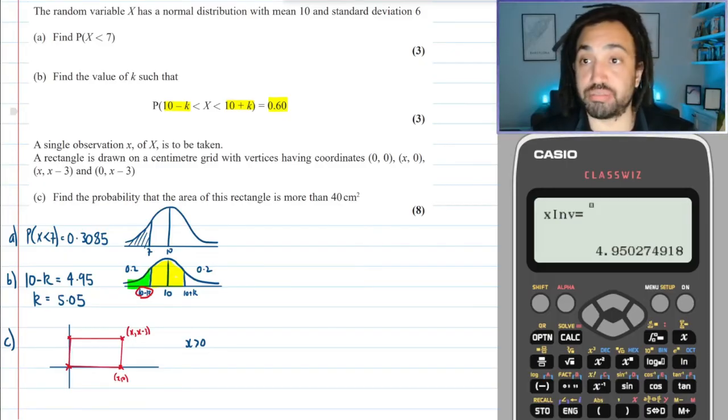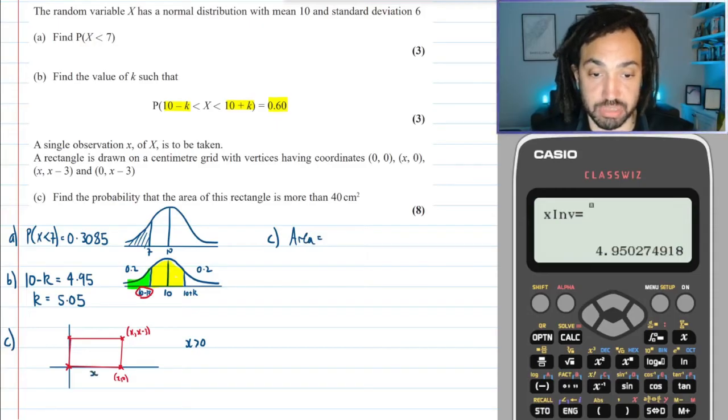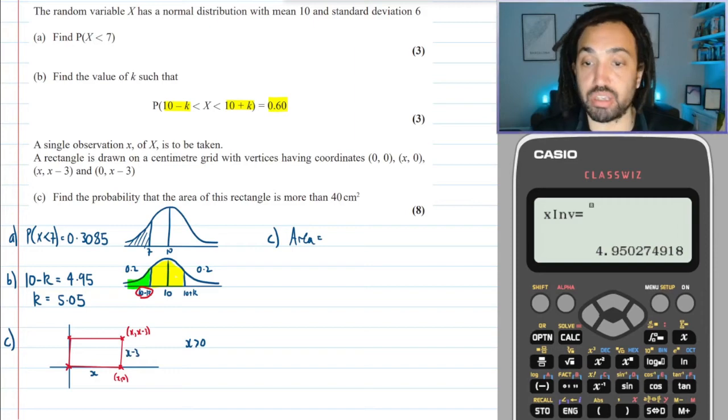Okay, so straight away I can figure out what the area of that rectangle is actually going to be. The area is going to be, well, this distance down the bottom is x—it has a width of x—and up here it has a height of x - 3. So the area is going to be x times (x - 3).